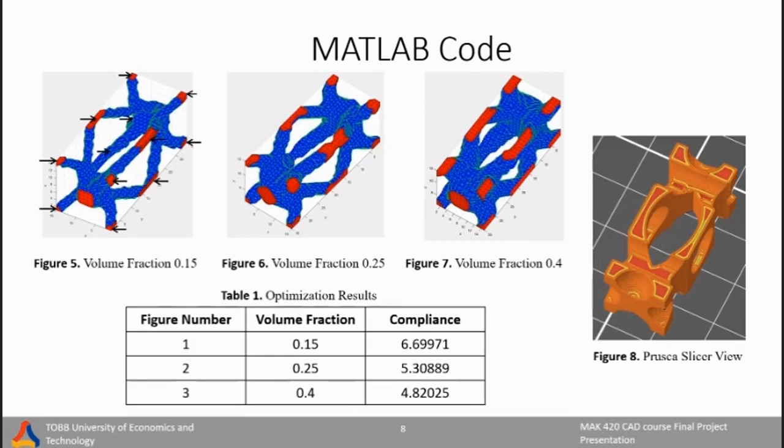Now I will continue with MATLAB for additional topology optimization process. First of all, I would like to explain our design space. We used one third of the original volume of the Avionics Bay. The reason for that is to decrease the computation time. And in Figure 5, as you can see, the fixed nodes are given, which are the outer corners of the design space and the mid-section's outer corners. And forces are given from the outer surfaces of the design space.